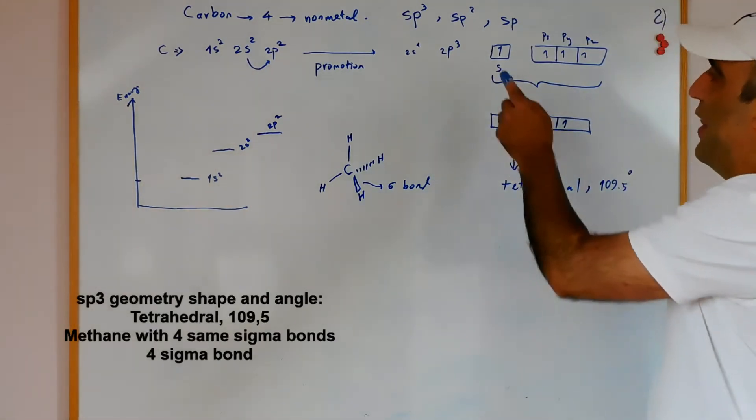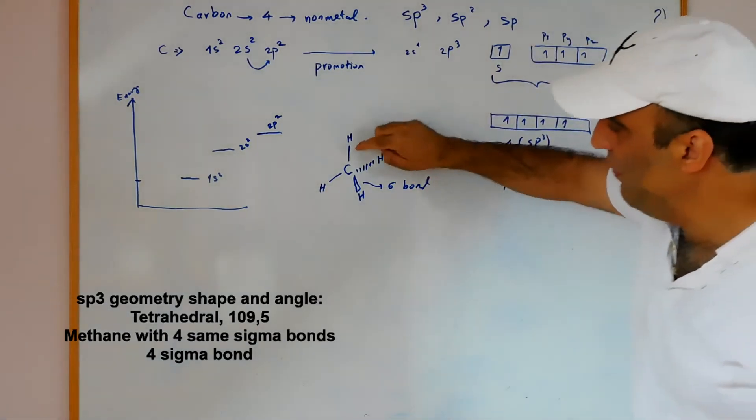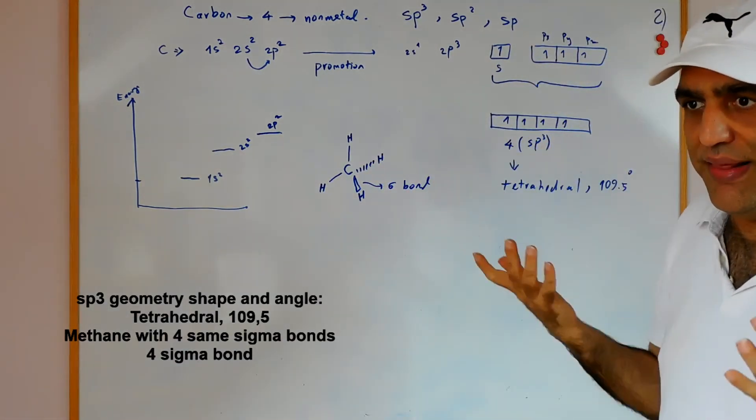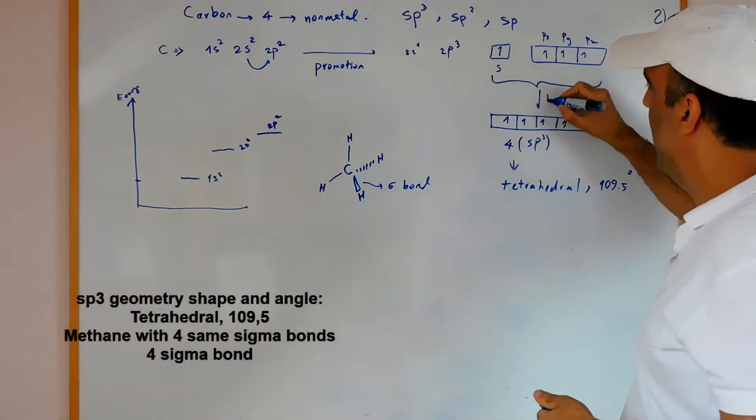As you see, the s is smaller than the three p orbitals. If you see here, this shape is the same and size is the same experimentally, and this process is hybridization.